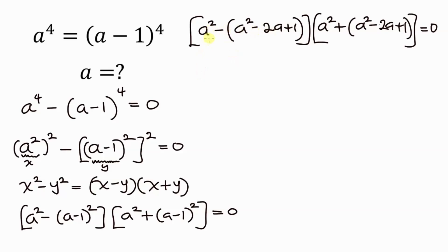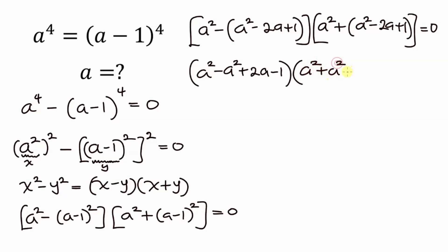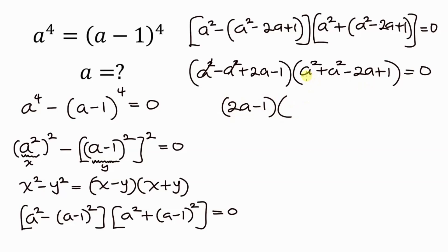Now let's open up the brackets. So this becomes a squared minus a squared plus 2a minus 1 for the first bracket. For the second bracket this will be a squared plus a squared minus 2a plus 1, and this is equal to 0. When we simplify further, a squared minus a squared cancels, so we have 2a minus 1 times 2a squared minus 2a plus 1, equal to 0.